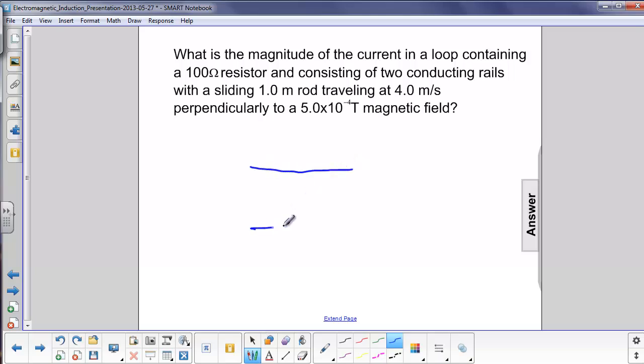We have two rails here. We have the sliding metal bar going to the right. And over here to complete the circuit we have a resistor hooked to some wire. The magnetic field didn't say in or out. It really doesn't matter because we're just trying to determine the magnitude.